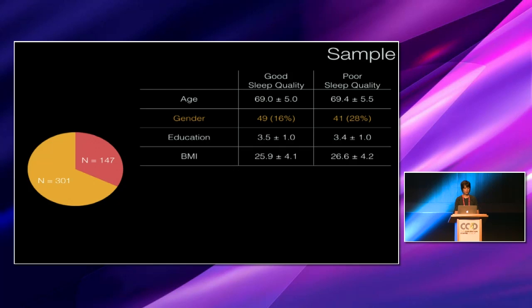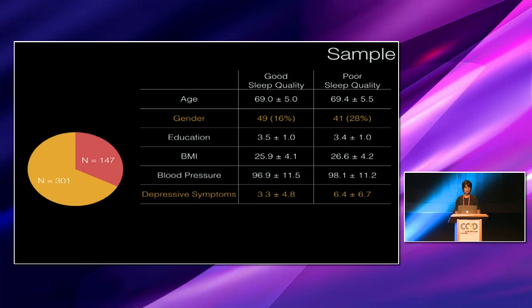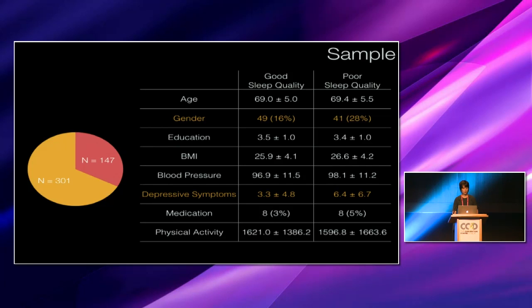We also looked at a variety of health and lifestyle measures. So the groups didn't differ in terms of their BMI levels or their blood pressure, but the poor sleepers did display a significantly higher level of depressive symptoms. We also looked at psychotropic medication. Only 16 participants reported being on antidepressants or anxiolytics, and the incidence wasn't significantly different between the groups. Physical activity didn't differ between the groups, and nor did general cognition, which we measured using the MOCA scale.